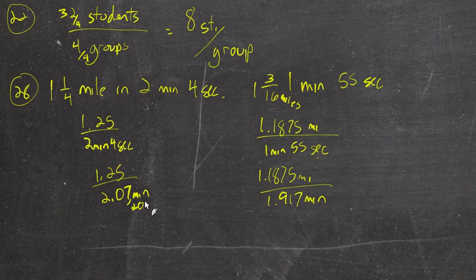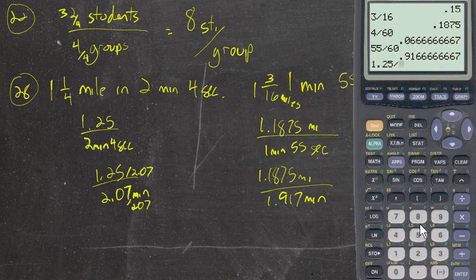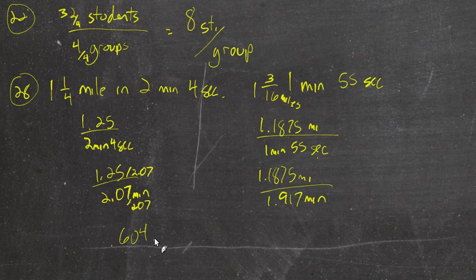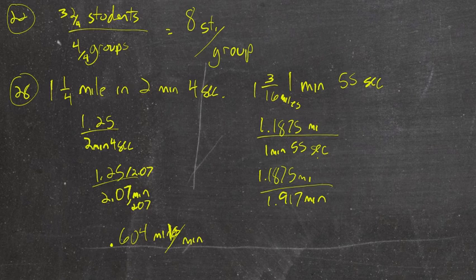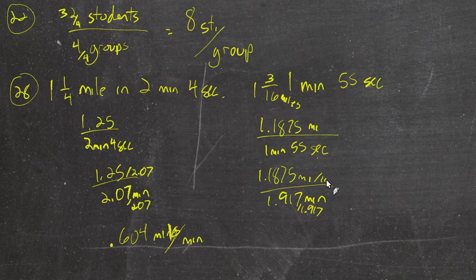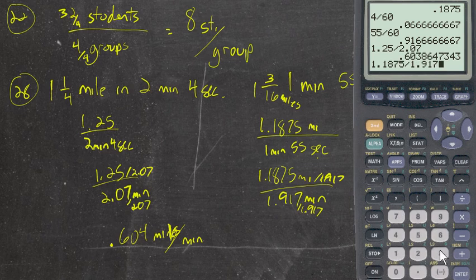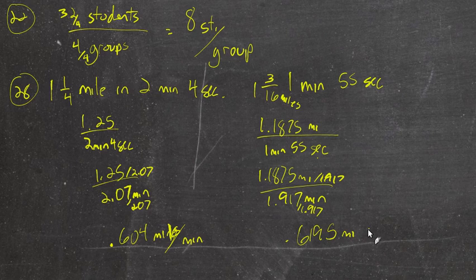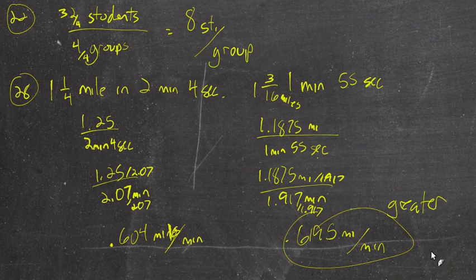Now we'll take and divide by the denominator on both here. So 1.25 divided by 2.07. So that's 0.604, let's call it, miles per minute. And now we can compare once we divide both of these by 1.917. 1.1875 divided by 1.917, 0.6195. What's bigger? 0.60, 0.61. So this would be greater.